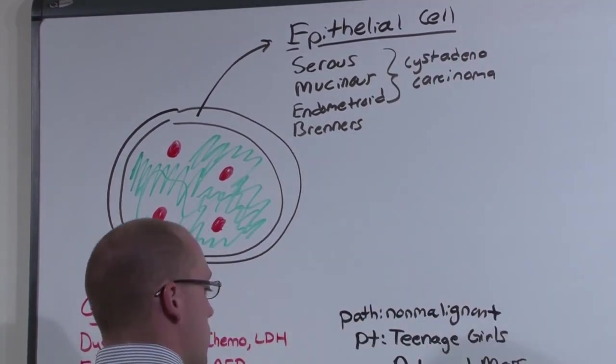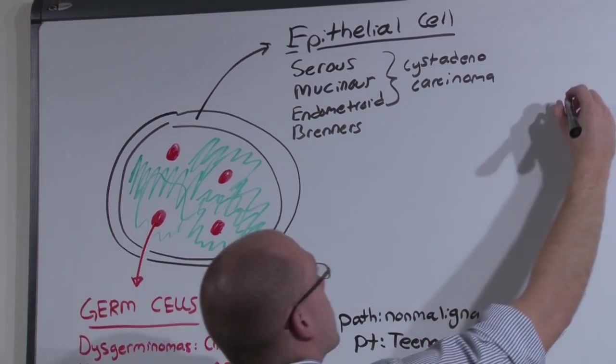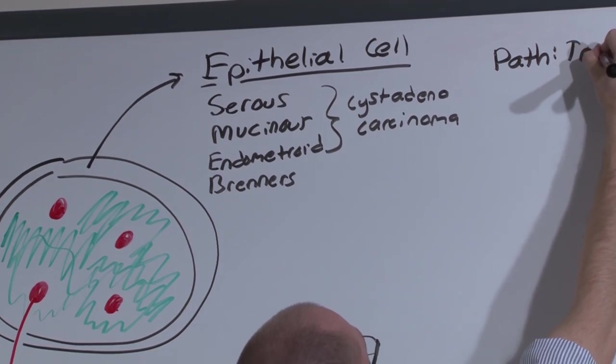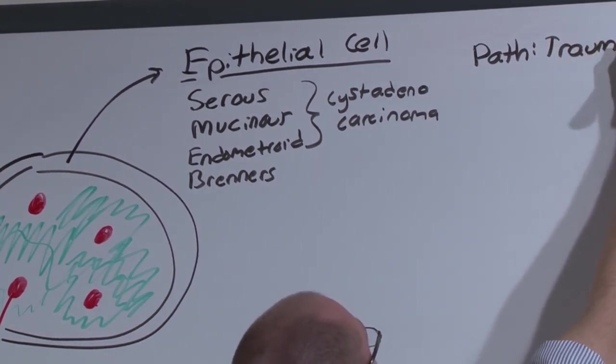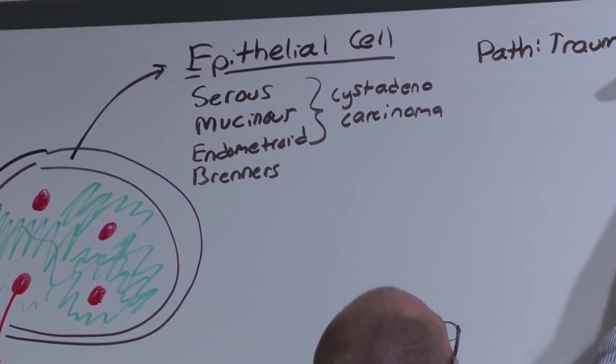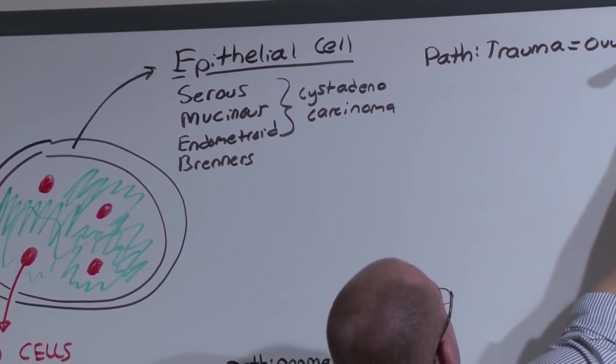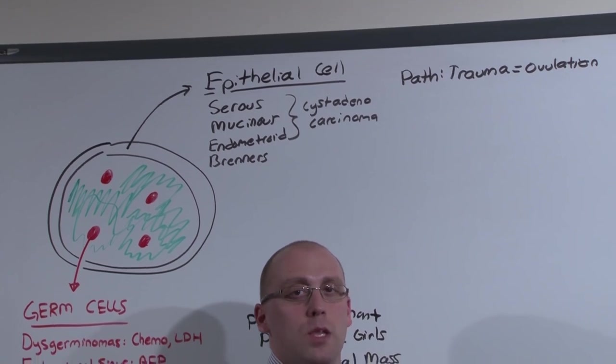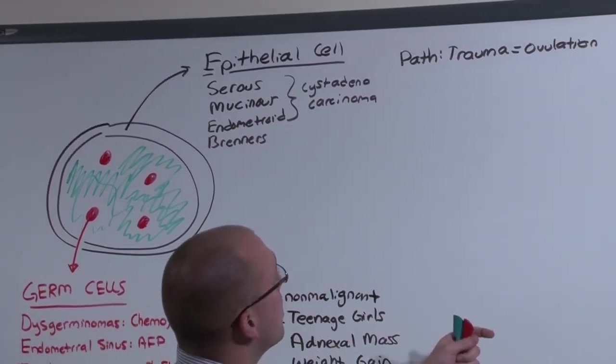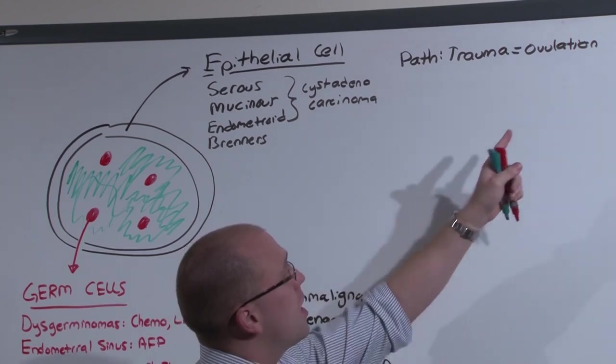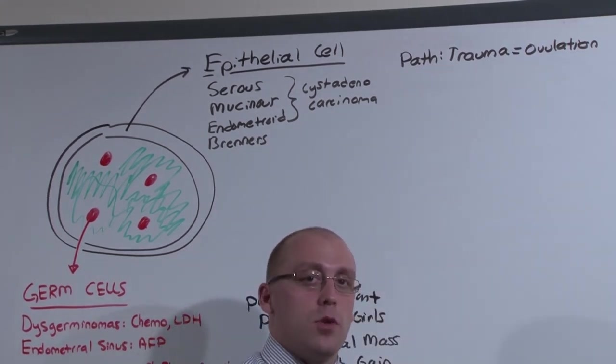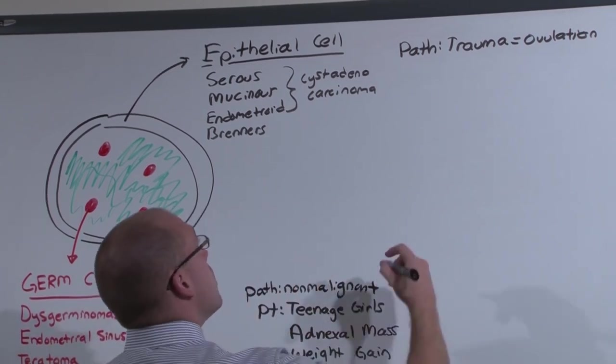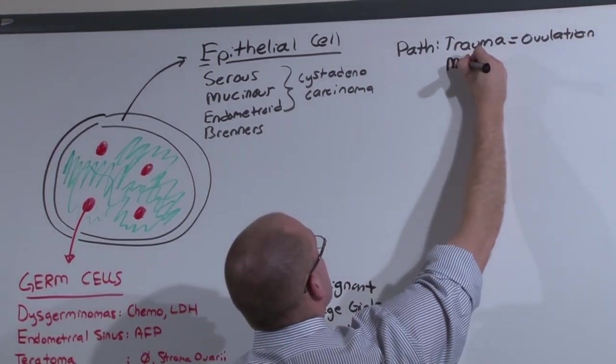This is very different than the germ cell tumor. The pathogenesis of these tumors is epithelial trauma, which essentially means ovulation. Each time you ovulate, the epithelial cell ruptures, the lining ruptures, and allows the egg to come out. And these are going to be extremely malignant.